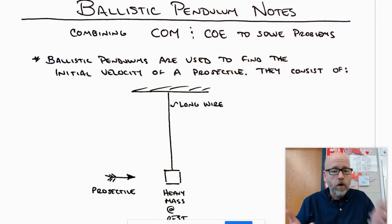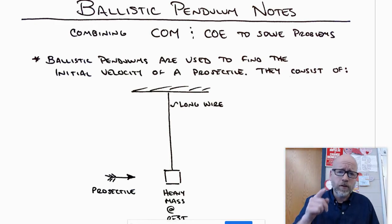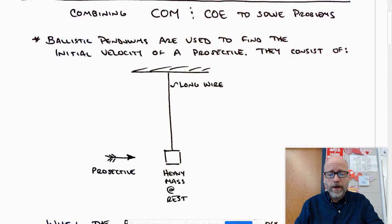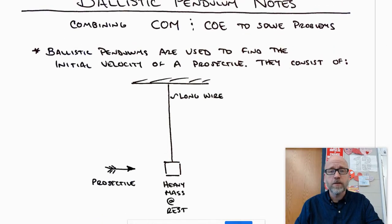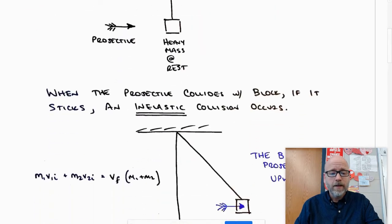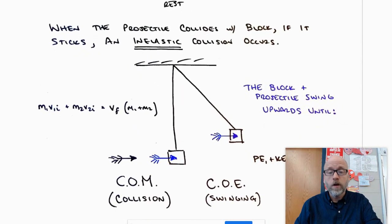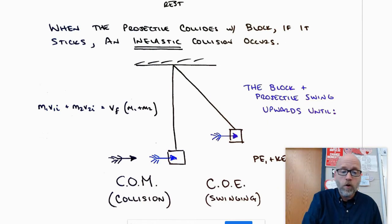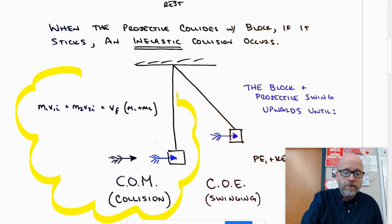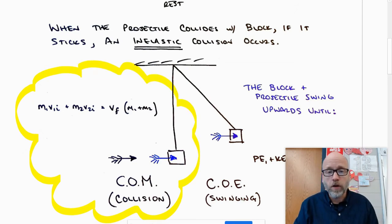And let's go from there. So the ballistic pendulum, this time we're using a collision as well as energy. So you can imagine a long wire hanging down with a heavy mass on the end and a projectile coming in to hit it. Now when the projectile collides with the block, if it sticks, an inelastic collision occurs. That is what is going to happen with the ballistic launcher.